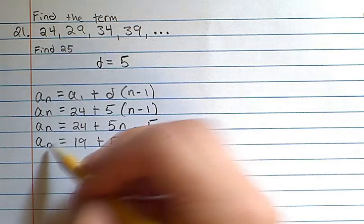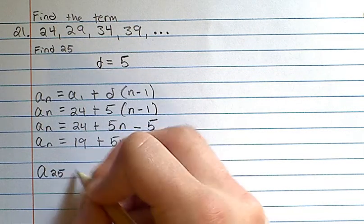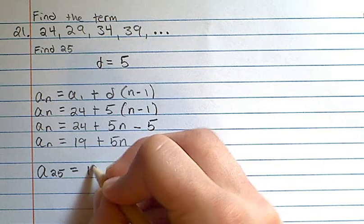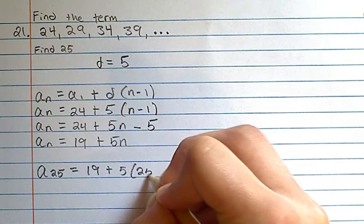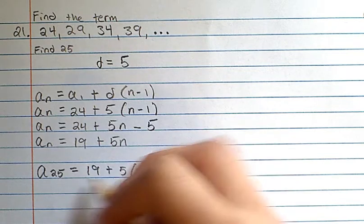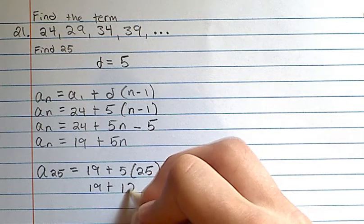by replacing n with 25. So we take a25 is equal to 19 plus 5 times 25. This will be 19 plus 5 times 25 is 125.